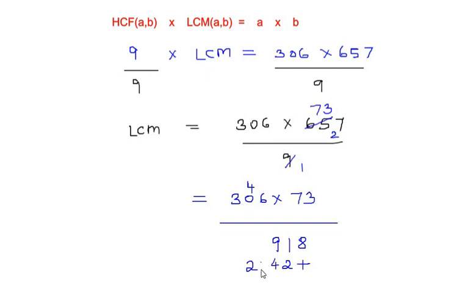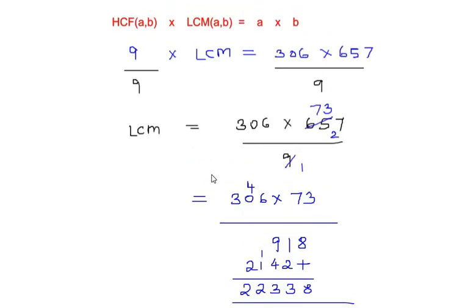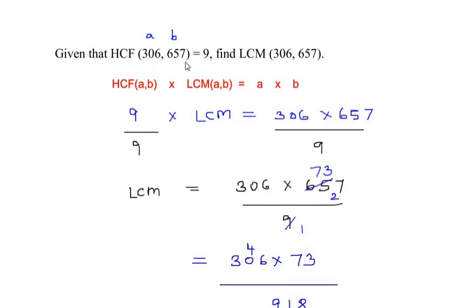So here we have 8, 3, 3, carry 1, and 1 plus 1 is 2, and 2. So we have 22,338. So this is the LCM of the given two numbers.